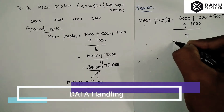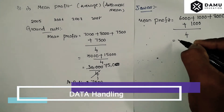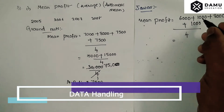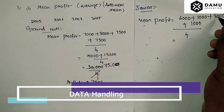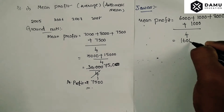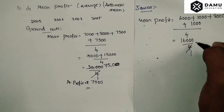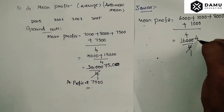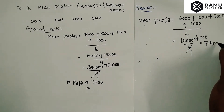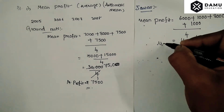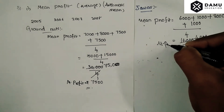Adding those values: six thousand plus two thousand plus eight thousand gives sixteen thousand. Sixteen thousand divided by four equals four thousand rupees — that is the mean profit for Java.